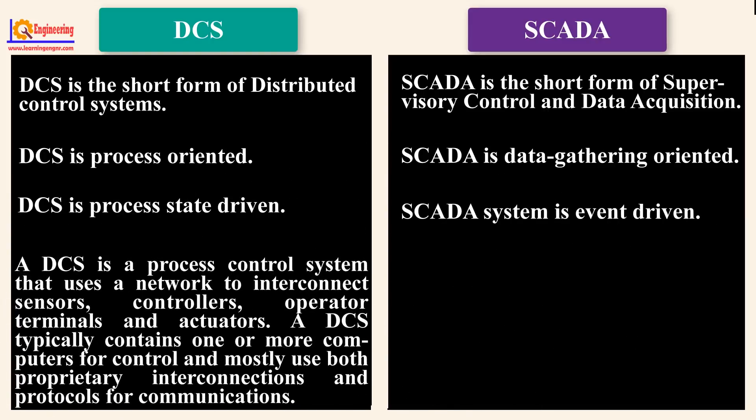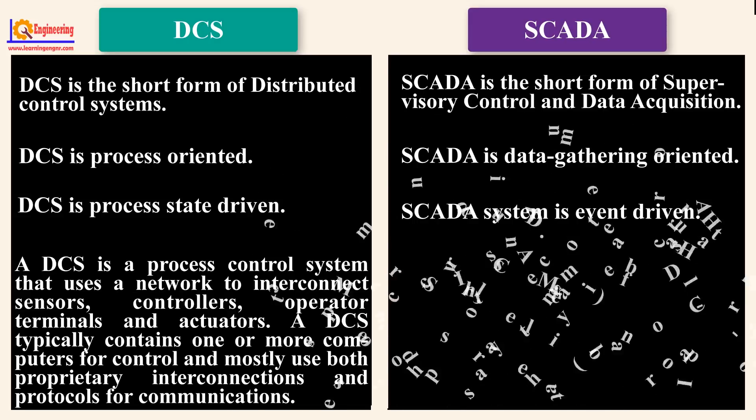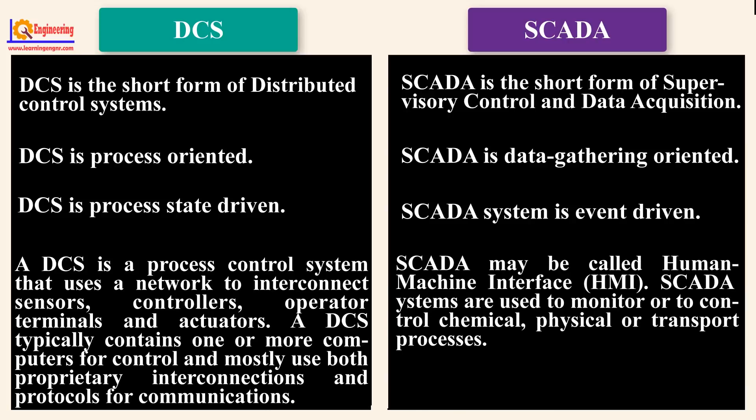DCS is a process control system that uses a network to interconnect sensors, controllers, operator terminals, and actuators. DCS typically contains one or more computers for control and mostly uses both proprietary interconnections and protocols for communications. SCADA may also be called a human-machine interface.